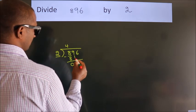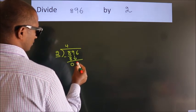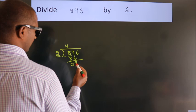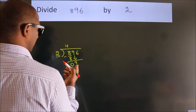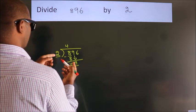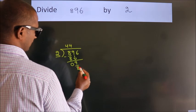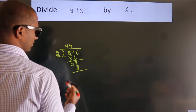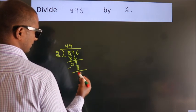After this, bring down the beside number. So 9 down. So 9. A number close to 9 in 2 table is 2 fours, 8. Now we subtract. We get 1.